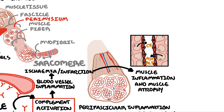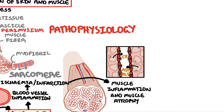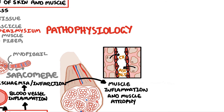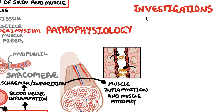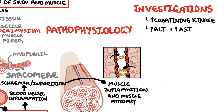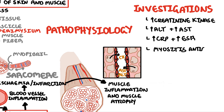Investigations include creatine kinase, AST, and ALT, which would all be elevated. Inflammatory markers CRP and ESR can both be elevated. Importantly, a myositis panel should be ordered to look for myositis-specific antibodies.